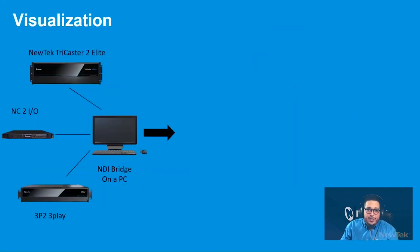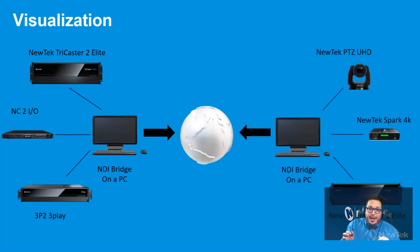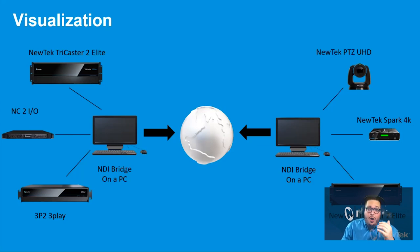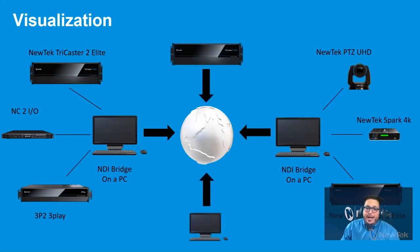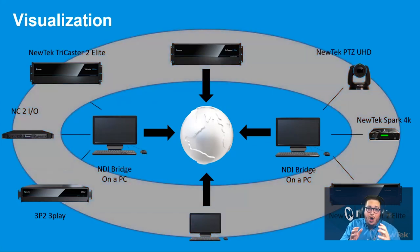Let's look at a quick visualization of working with Bridge. On one side, I have a computer with NDI Bridge running, a TriCaster, an NCTIO, and a 3Play 2, connected to the wide area network. On the other side of that WAN connection, I have a computer running Bridge, another TriCaster, a Spark, and a PTZ camera. Once that connection is established — just like we showcased in our demonstration — those sources can all be shared over the wide area network. I can add another TriCaster, another computer, another NDI source, and effectively all of these sources are treated like they're on a local area network connection.